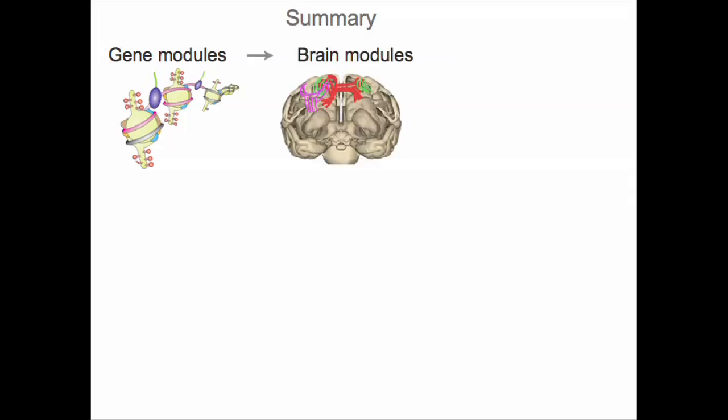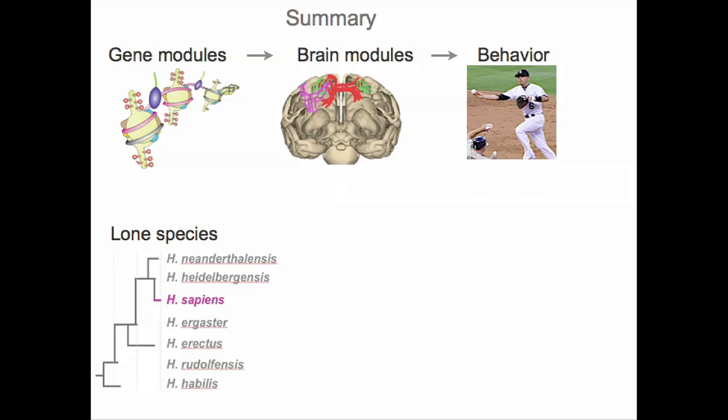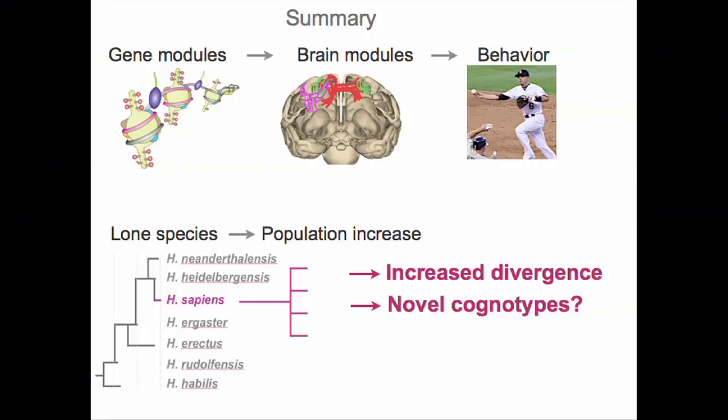What I want to specifically suggest is that we ain't seen nothing yet. The amount of variation that's about to occur over the coming centuries is probably going to greatly exceed what we see now, and in fact we may even see entirely new human types. Genes come in modules; because they're modular, they only build certain configurations of brains, and those affect behaviors — making behaviors fall into categories we call cognotypes. Our species had an enormous population increase that increased its divergence, and we're hypothesizing there's going to be quite a bit more of that divergence — possibly entirely new cognotypes we've never seen before. That's one hypothesis of the potential future of the human brain.